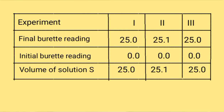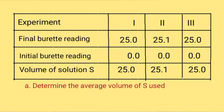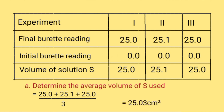The titer values are shown in the table. Remember that when filling the table, values must be recorded to one decimal place, and two or three values must be within a range of plus or minus 0.1 cm³. To determine the average volume of solution S used, average two or three values within that range. In this case, all values qualify: (25.0 + 25.1 + 25.0) divided by 3 gives 25.03 cm³.